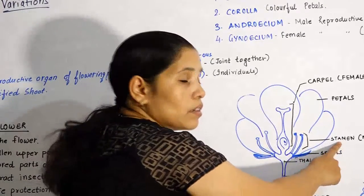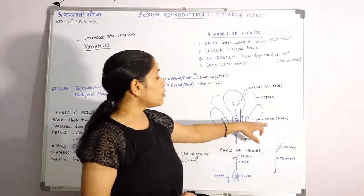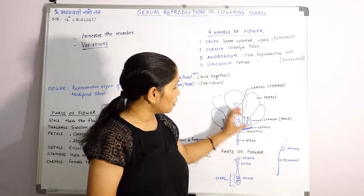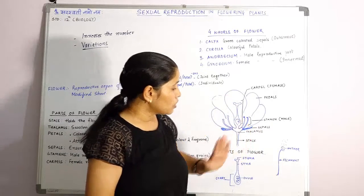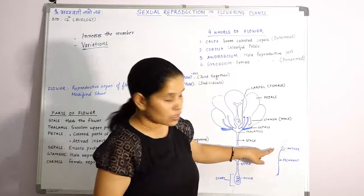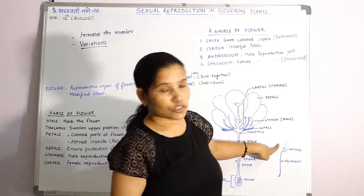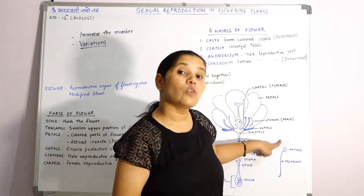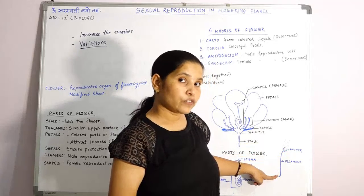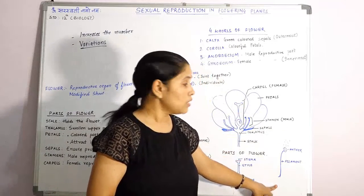Next you get the stamen. Stamen is the male reproductive part of the flowering plant. In the stamen you will see the anther. If I show you an enlarged view of the stamen portion, here you can see the anther — it is a bilobed structure. If you cut it, you will see small particle-like structures known as pollen grains. Pollen grains are the male gametes of any flowering plant. The anther is held over a very thin stalk known as the filament. So stamen — consisting of anther and filament — is the male reproductive part of any flowering plant.